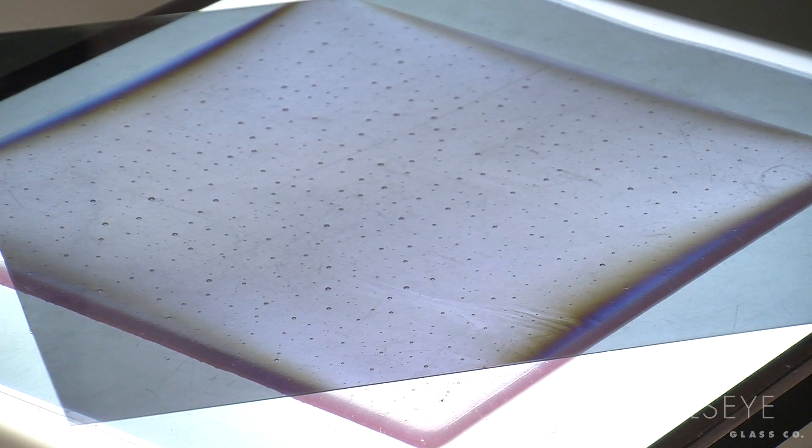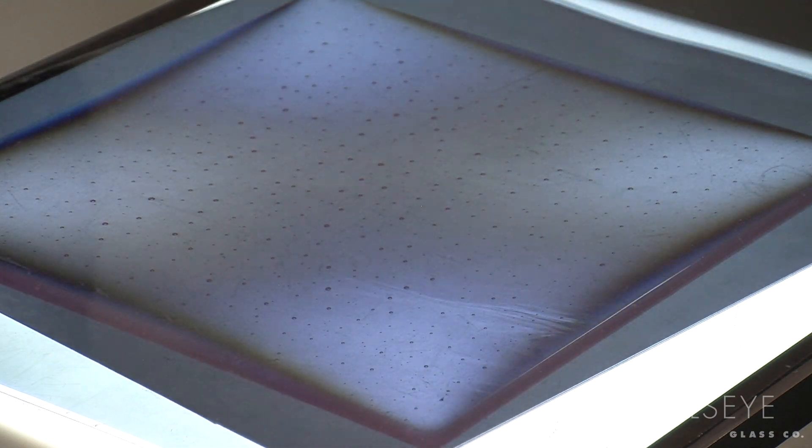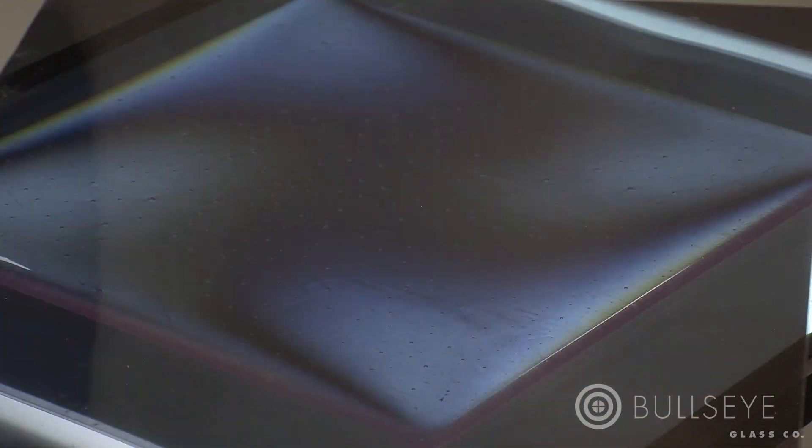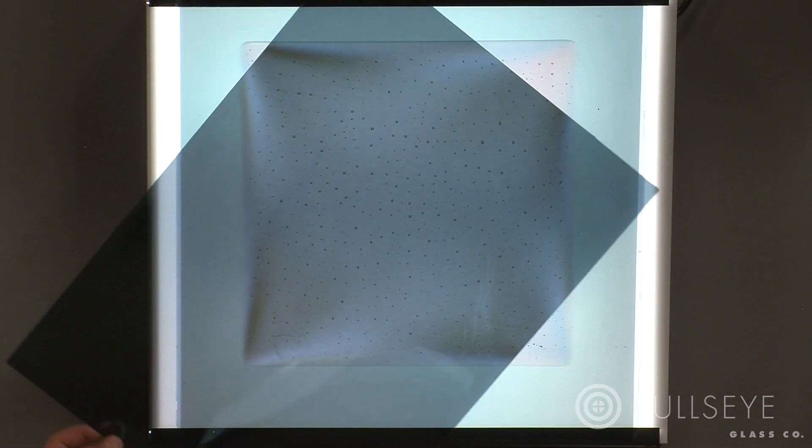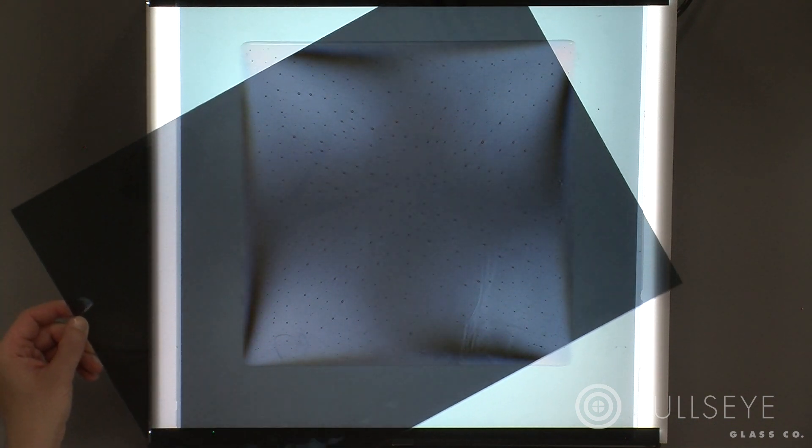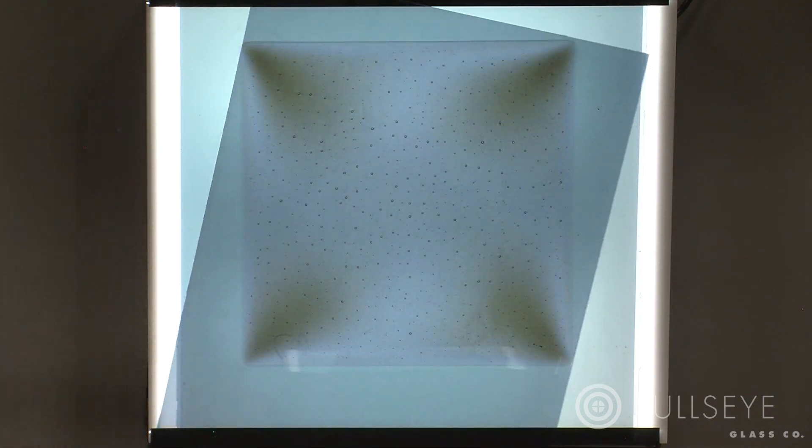With this piece, we under-annealed the work and let it cool at a rate too fast relative to its thickness. Polarized light reveals a dark rainbow where light is bent by the strain within the piece. This strain will remain present in the glass until either the piece fails or the strain is removed through re-annealing.